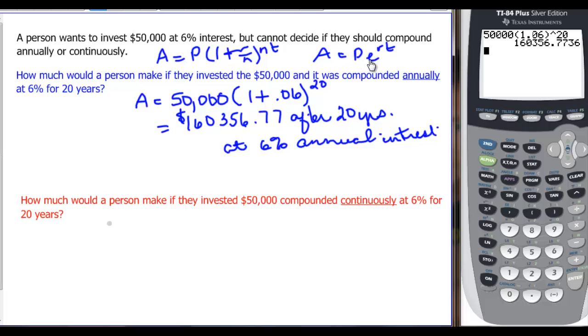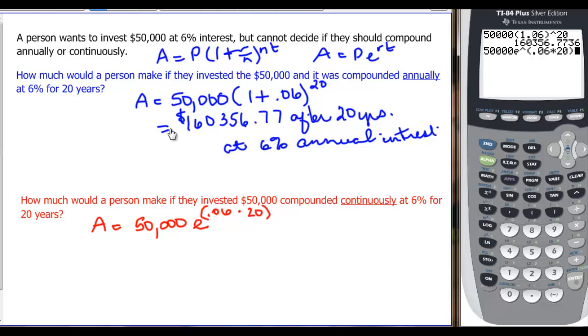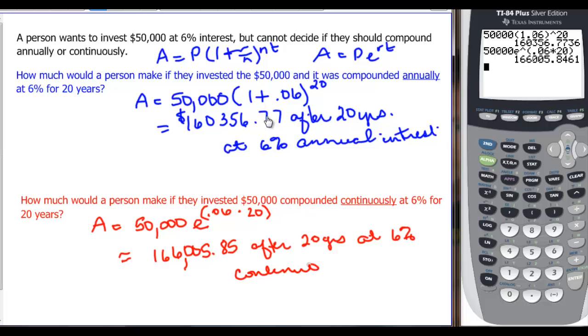If we wanted to know continuously, we would have A equal to our 50,000. That's our P. And then e is our base to the R, which is 0.06 times the T, which is 20 years. So this time we have more in our exponent, 50,000. Then second LN, remember we'll get you to the e. And then we can write 0.06 times 20 and then close the parenthesis. We get approximately $166,005.85 after 20 years at 6% continuous interest.